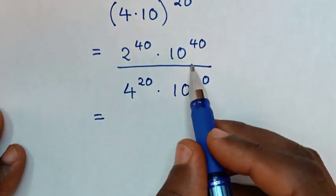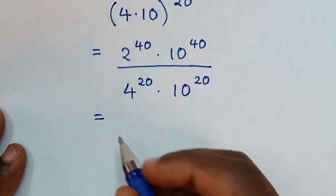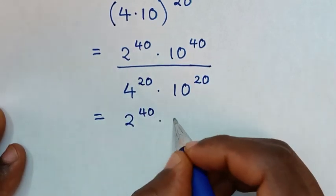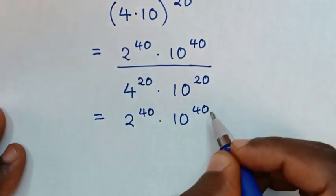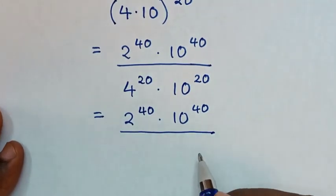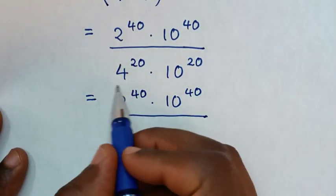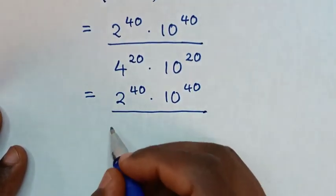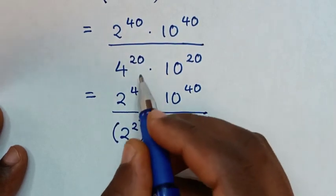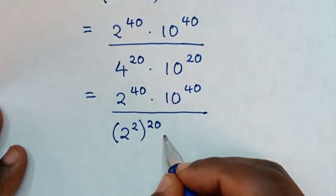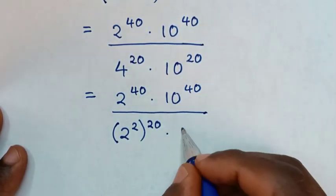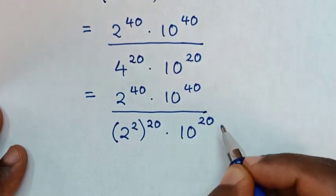In the numerator it will be the same: 2 power of 40 times 10 power of 40. Over, in the denominator, this 4 is the same as 2 squared, then bracket to the power of 20, then times 10 power of 20.